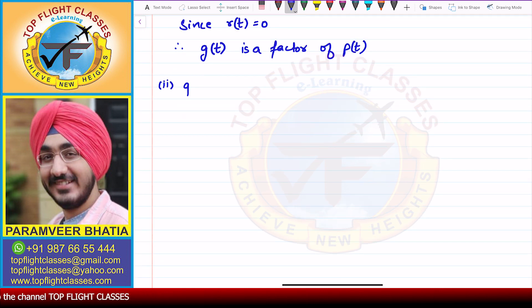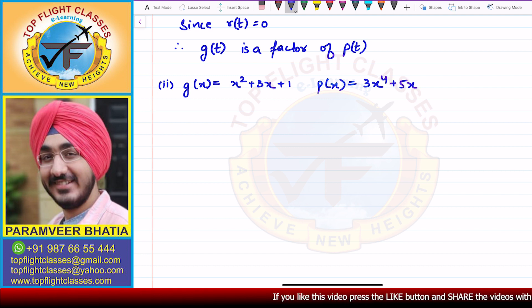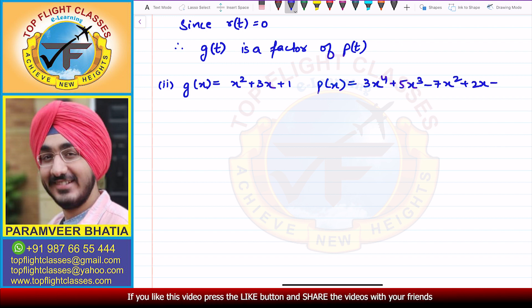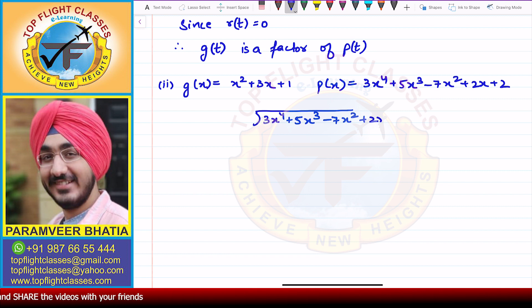Moving on to the second part: g(x) = x² + 3x + 1, and p(x) = 3x⁴ + 5x³ − 7x² + 2x + 2. We apply the long division method, dividing p(x) by g(x).